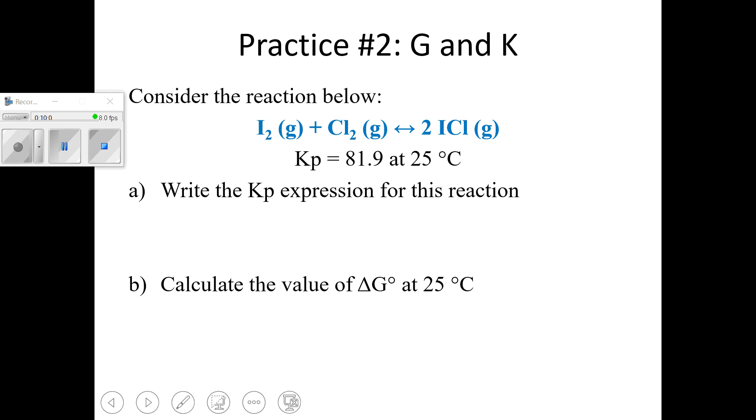Let's try one more calculation here. This time we're going to calculate delta G. But first let's write the KP expression for this reaction. So when you write a K expression, it's products over reactants. Coefficients become exponents, and we leave out solids and liquids. So products over reactants. So my product is ICL. And then my coefficient becomes my exponent. And then the reactants are I2 and CL2. So that's my KP expression.